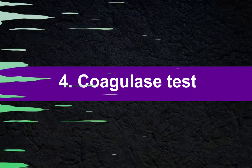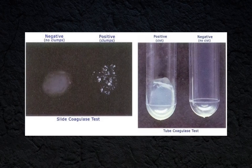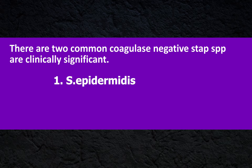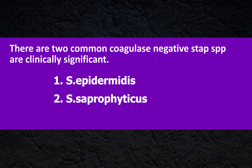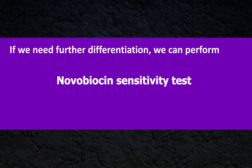If we suspect a Staphylococcus species, then we can perform the coagulase test. For Staphylococcus saprophyticus it gives negative results. There are two common coagulase-negative Staphylococcus species that are clinically significant: they are Staphylococcus epidermidis and Staphylococcus saprophyticus.